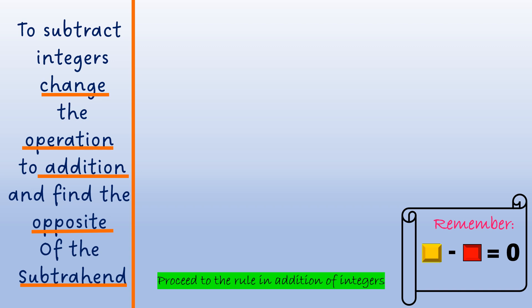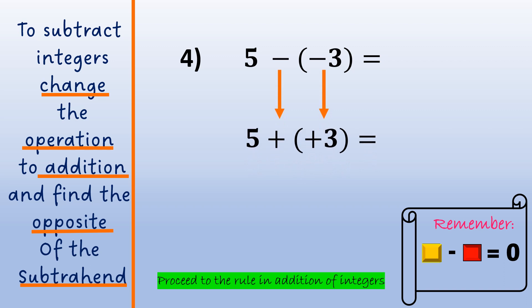One last example: positive 5 minus negative 3. The minuend, positive 5, stays the same. The operation will change to addition, and the opposite of the subtrahend, negative 3, is positive 3.